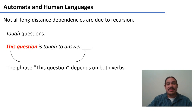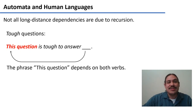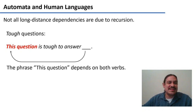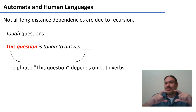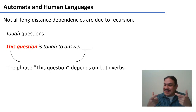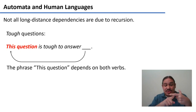This long-distance dependency was caused by recursion, but these two phenomena are different — not all long-distance dependencies are due to recursion. For example, there's a kind of structure called tough sentences, such as 'this question is tough to answer.' 'This question' is the subject of 'is' but also the object of 'answer.' If spelled out semantically, it would be 'this question is tough to answer this question' — a long-distance relationship where the same element must be read at two different parts of the structure.